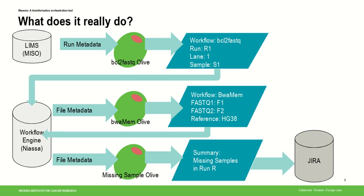Those run on our workflow engine and a record is written out for every file generated. We then have a BWA-MEM Olive that can ingest all of that file metadata, pick out the appropriate FASTQ pairs, and coupled with the right project information, figure out how to run them with BWA-MEM — and again write that information back to the workflow engine's file output store.